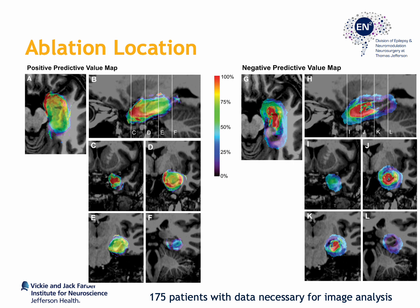Ultimately, what we want is both a high positive predictive value as well as a high negative predictive value. When we take that into consideration, what we see is that the ablation must certainly involve the amygdala, hippocampal head, as well as hippocampal body. But as we go more posteriorly, specifically past the plane defined by the lateral mesencephalic sulcus, the utility of performing an ablation beyond this plane significantly diminishes.